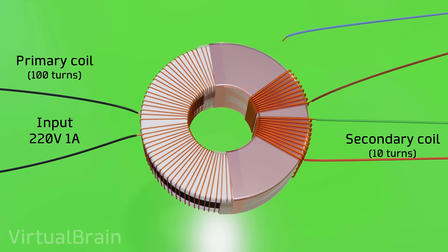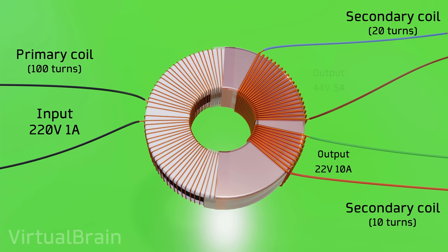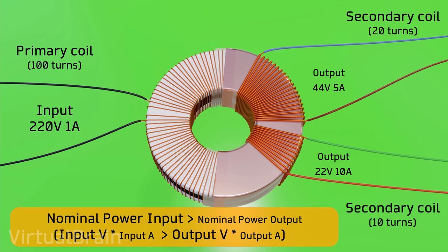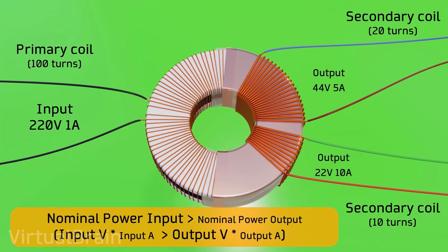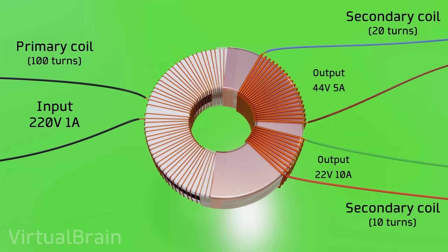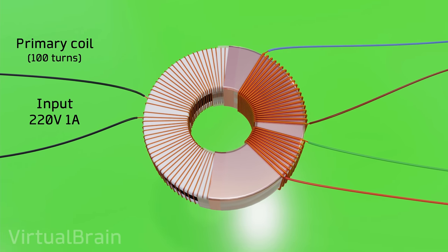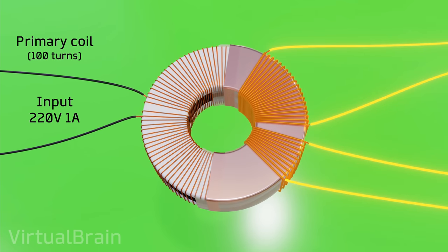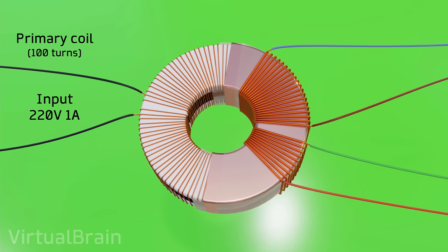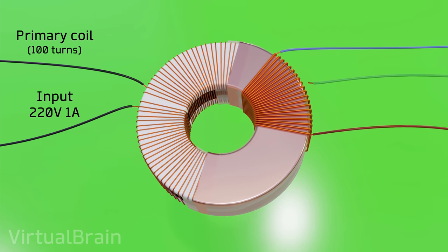Now, if we add a second secondary coil, this time with 20 turns we would have a new output of 44 volts and 5 amps. Although remember that the nominal output power will never be greater than nominal input power. Even though now we would have two possible voltage outputs, this design can be simplified, since we will have 30 turns and 4 output cables. What we can do is merge both secondary coils in one. That is, leave only 20 turns and add an extra cable right on the 10th turn.